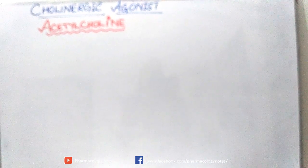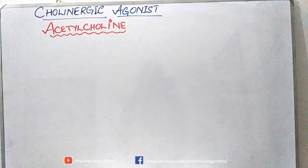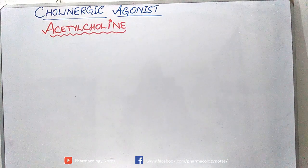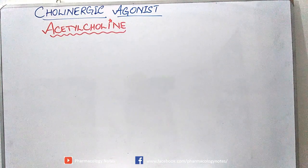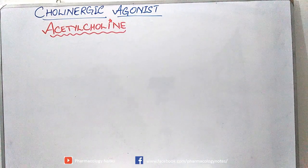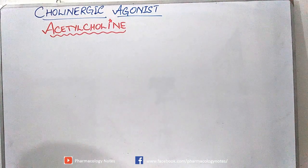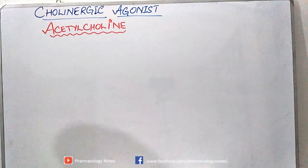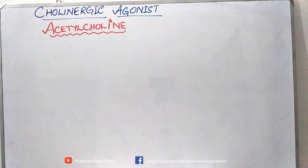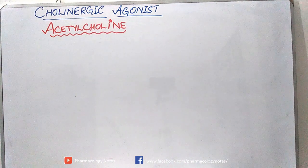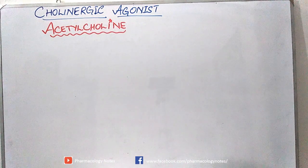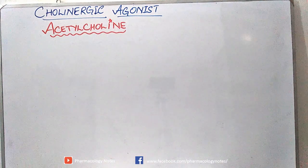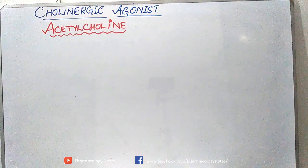Cholinergic agonists — what are these drugs? Cholinergic agonists are all those agonists which stimulate cholinergic receptors. As we have discussed the sympathetic nervous system, the peripheral nervous system has two divisions: sympathetic and parasympathetic nervous system.